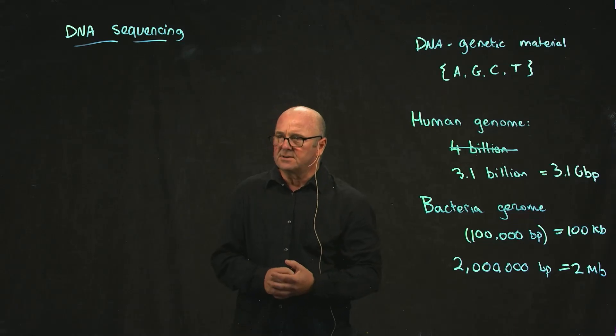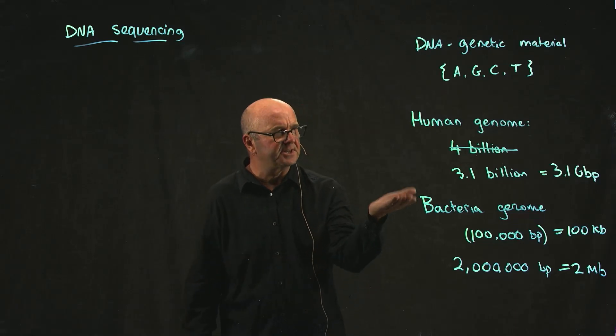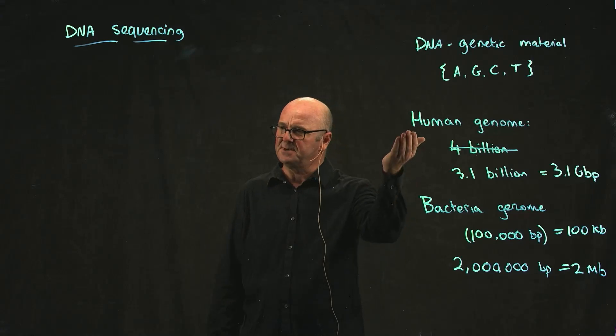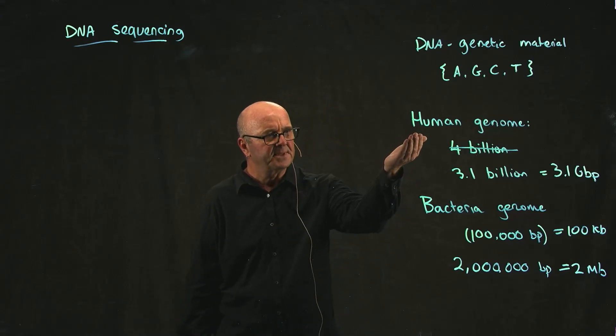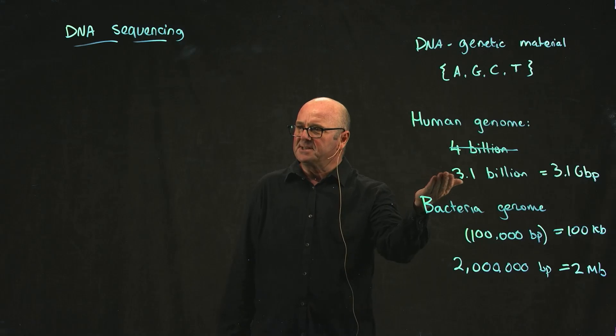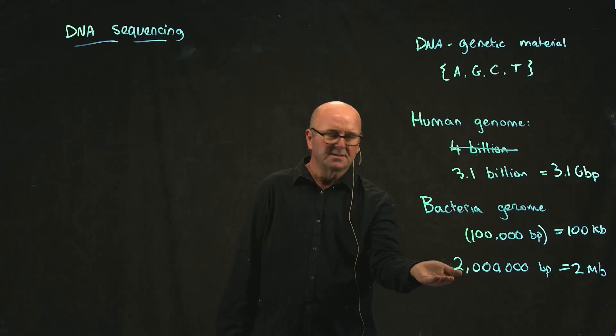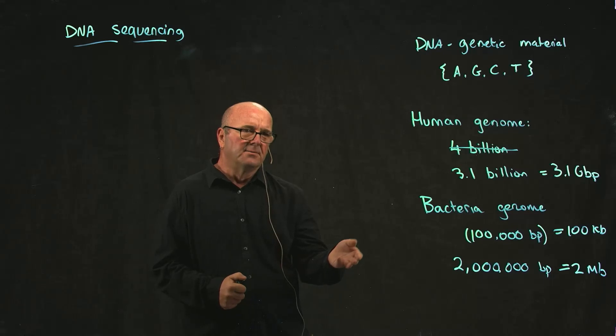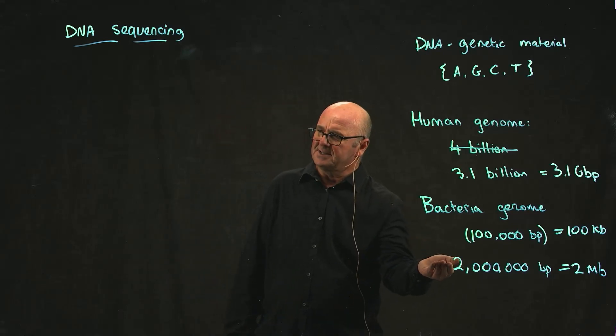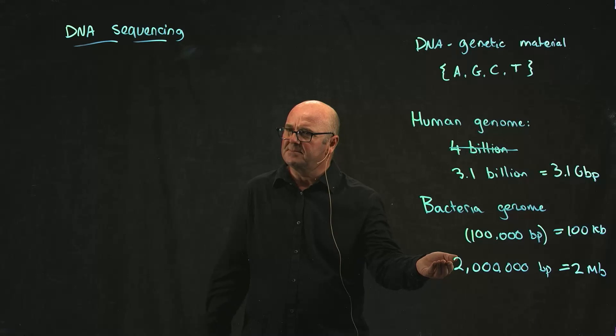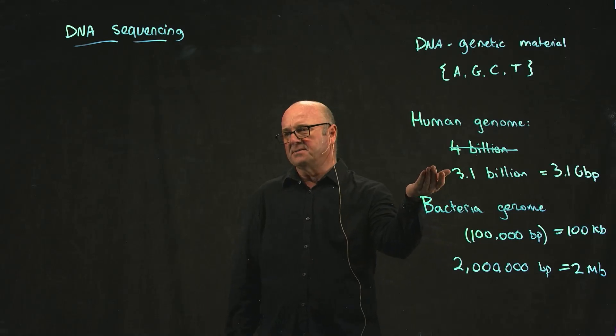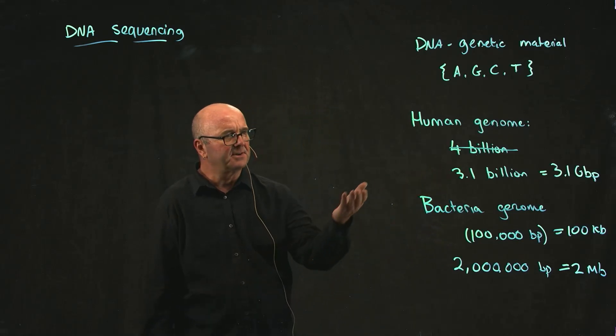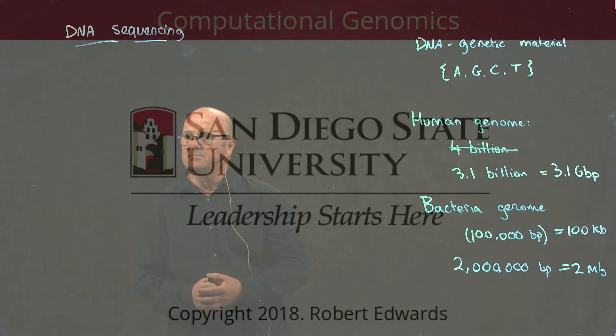So the reason in this course we're looking at bacterial genomes and not human genomes - well, there's a bunch of different reasons, one of which is that human genomes are really boring because they're all the same. But the main reason is that we've gone from 3 times 10 to the 9 to 2 times 10 to the 6. So we've reduced our complexity by a million fold. What that means, in reality, is that you can actually analyze the data on a free Amazon machine or on your laptop or on a regular computer, whereas if we tried to do this stuff on the human genome, we'd need more complex, bigger servers to compute on.